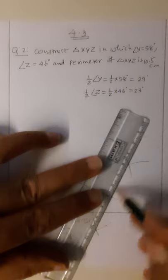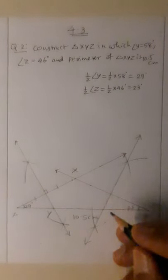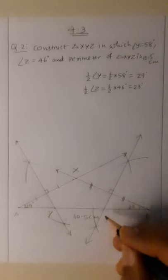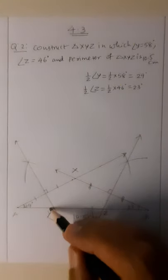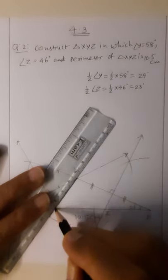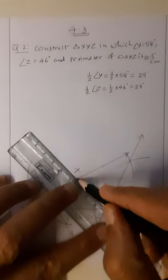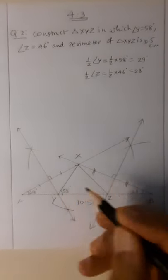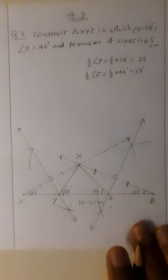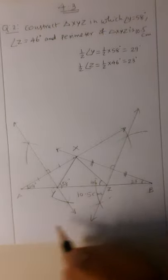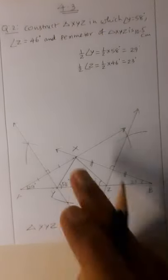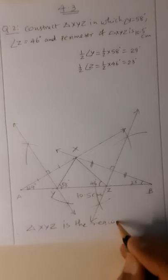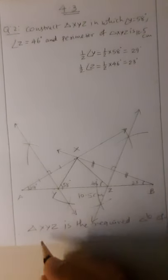I join the points of intersection for the second perpendicular bisector of XB. This cuts segment AB at point Z. The first perpendicular bisector cuts AB at point Y. Now I have three points X, Y, Z. I join XY and XZ to complete triangle XYZ — the required triangle with angle Y = 58 degrees and angle Z = 46 degrees.